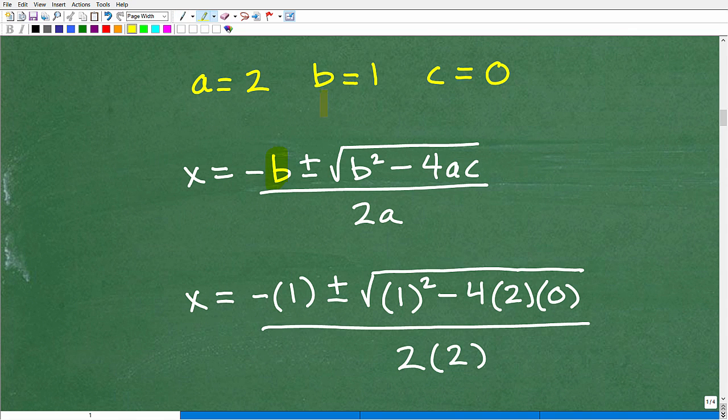Here's B, negative B, so this is B is equal to one. So I'm going to set this up. That's going to be negative one plus or minus the square root of B squared, so that's one squared, minus four times A. A is two, times C is zero, okay? So that's all over two times A, which is, of course, going to be two times two.